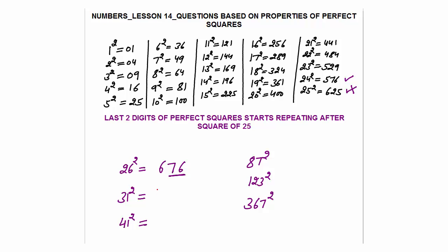Look at 31 squared: if you calculate with a calculator, 31² = 961. Have the last two digits 61 already appeared? Yes — 19 squared has last two digits 61. Similarly, 41 squared equals 1681. Have the last two digits 81 already appeared?